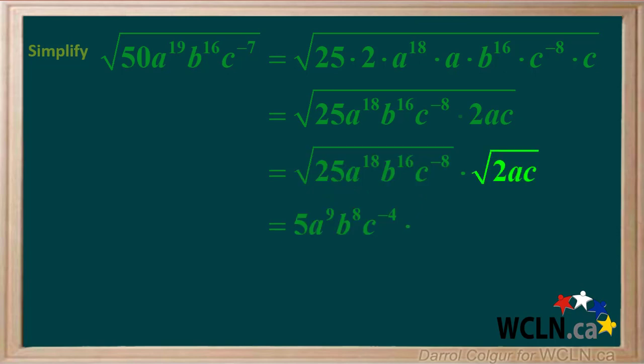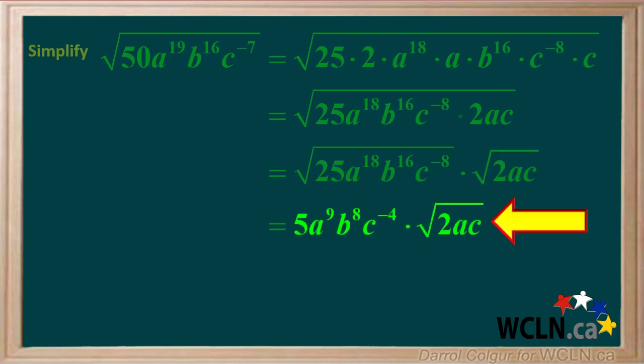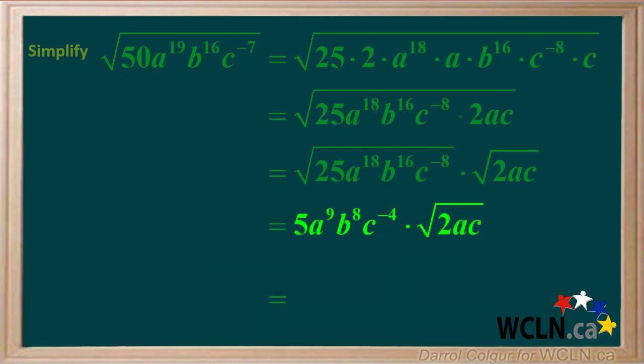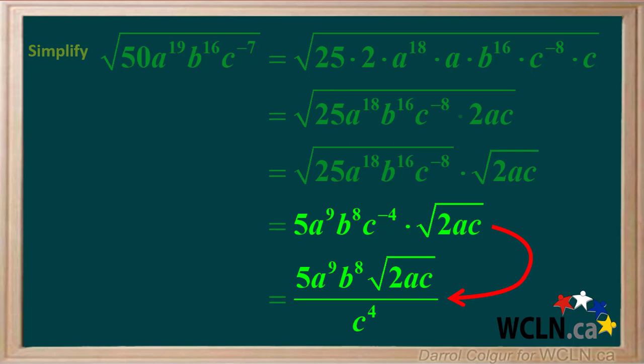The square root of 2ac cannot be simplified, so we just write it down here the way it is. So we're left with this expression. Remember, any number or variable with a negative exponent is the same as its reciprocal with a positive exponent. So we'll write it as 5a to the 9th b to the 8th times the square root of 2ac, all over c to the 4th.